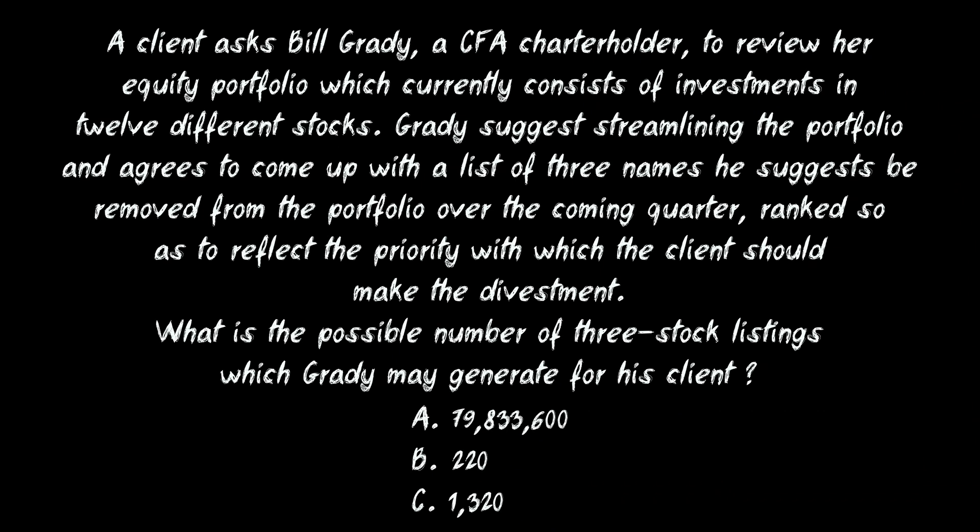A client asks Bill Grady, a CFA charterholder, to review her equity portfolio which currently consists of investments in 12 different stocks. Grady suggests streamlining the portfolio and agrees to come up with a list of three names he suggests be removed from the portfolio over the coming quarter, ranked so as to reflect the priority with which the client should make the divestment. What is the possible number of three-stock listings which Grady may generate for his client? 79,833,600, 220, or 1,320?